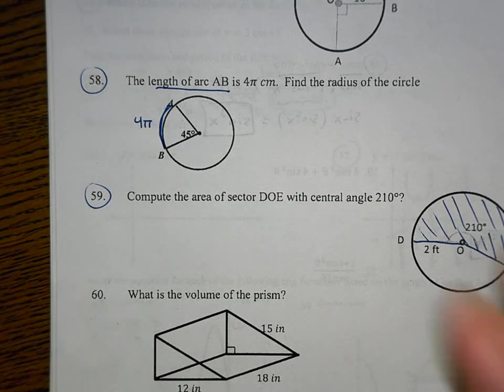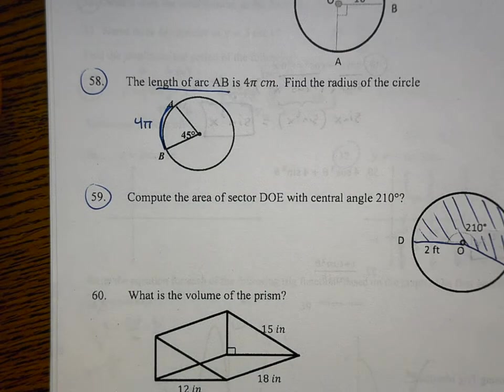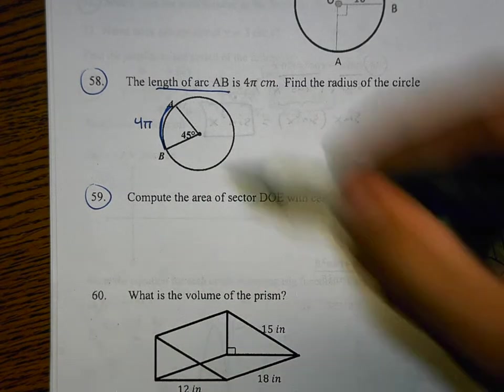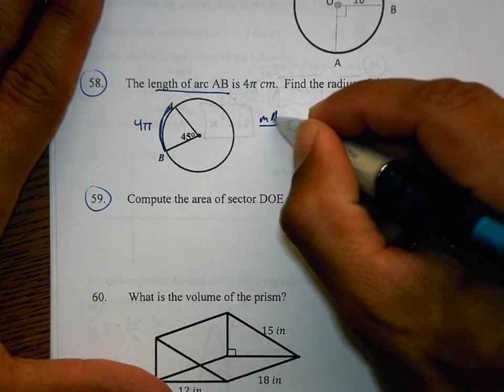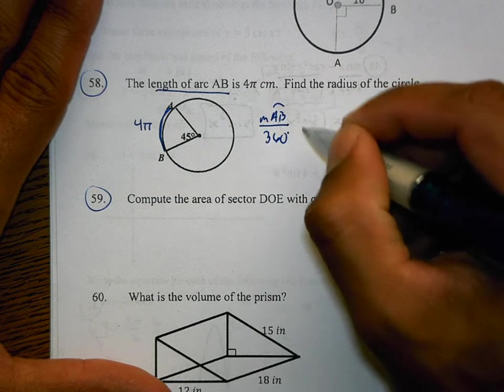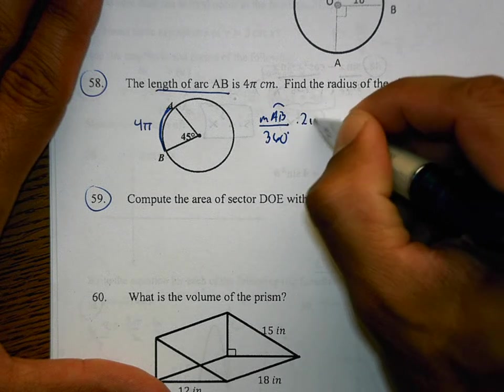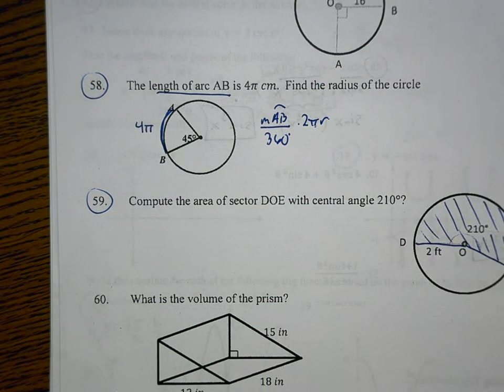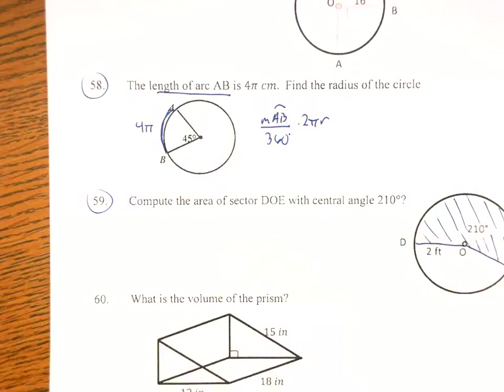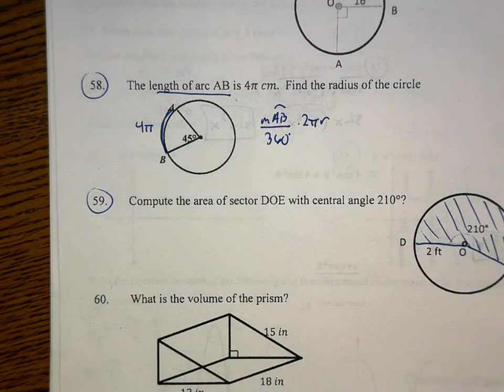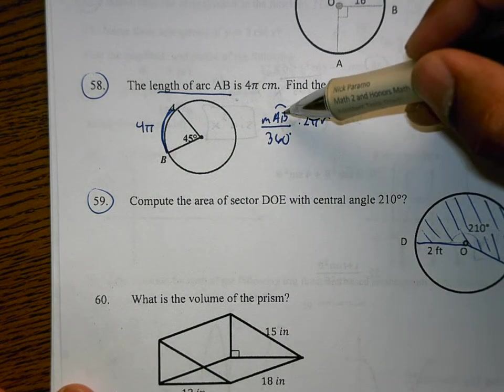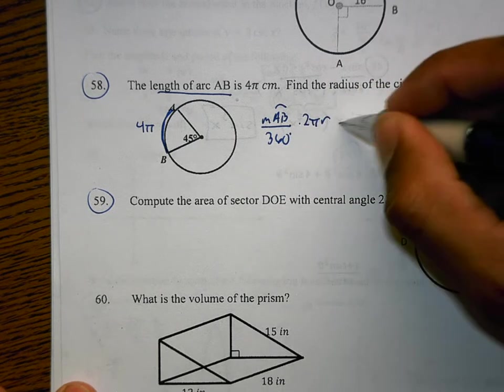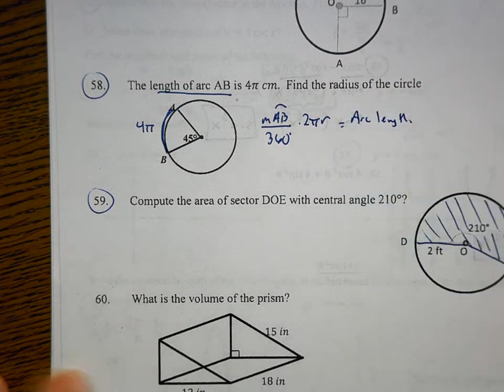Arc length is a part of that whole circle. So if we're thinking that it's part of the whole circle, then it must be some degree amount out of 360 degrees times by 2πr, which is the distance around the entire circle, which is circumference 2πr.